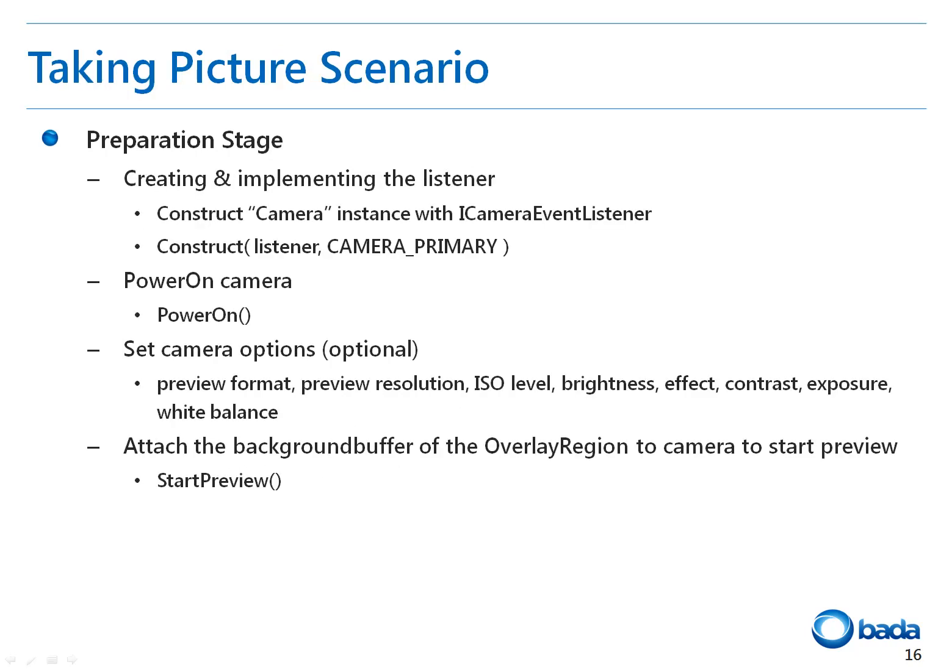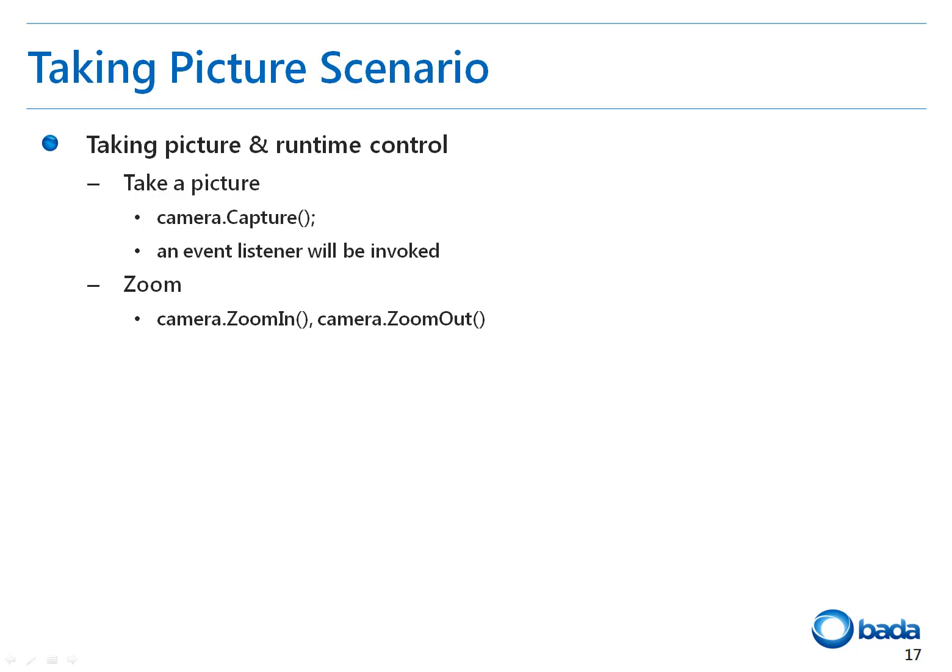To prepare taking a picture, create and implement the iCameraEventListener object. Then construct the camera specifying the iCameraEventListener and the camera device. Turn the camera on using the PowerOn function. If necessary, you can set various camera options such as preview format, preview resolution, ISO level, brightness, effect, contrast, exposure, and white balance. Finally, call the camera's StartPreview function specifying the background buffer of the overlay region. When the picture is taken, the Capture function of the camera is called, and the corresponding event listener is invoked to deliver the captured image. To use zoom during the preview, use the ZoomIn and ZoomOut functions. The OnCameraCaptured function notifies that the picture has been taken successfully, and OnCameraPreviewed is called for each frame of the preview.